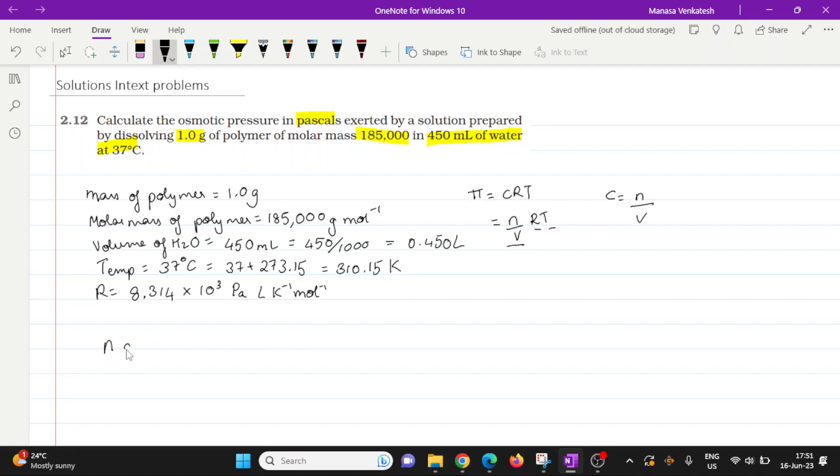So n of the polymer or the number of moles is going to be mass divided by molar mass. So that is 1 gram divided by 185,000 grams per mole. Okay, so what we'll do is we're just going to be substituting this in this equation. I'm just going to substitute this as n and then let's go from there.